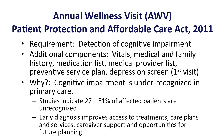So why is this important? We know that cognitive impairment is under-recognized in primary care in particular. Studies indicate that 27 to 81 percent of affected individuals go unrecognized. Early diagnosis can improve the access to treatments, care plans and services, caregiver support, and opportunities for future planning.